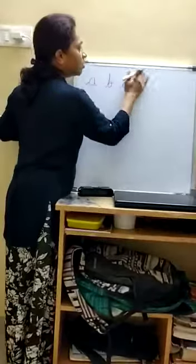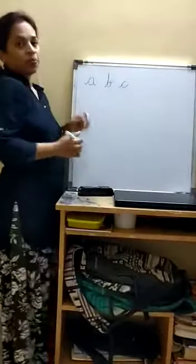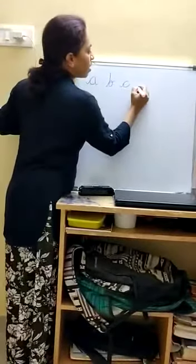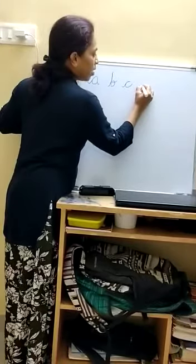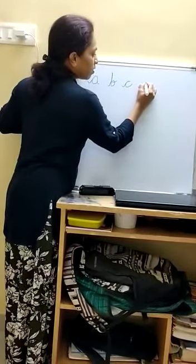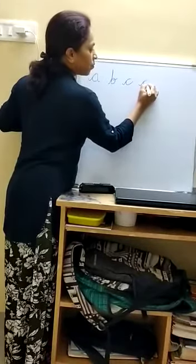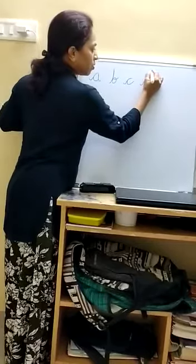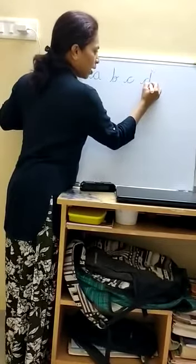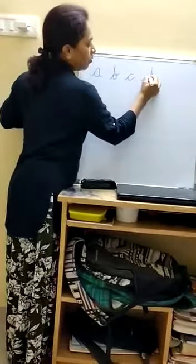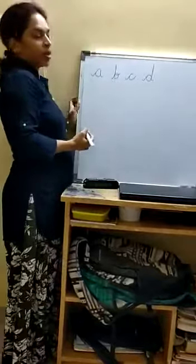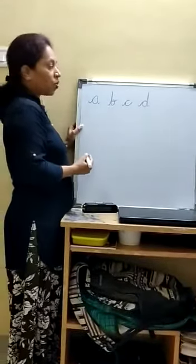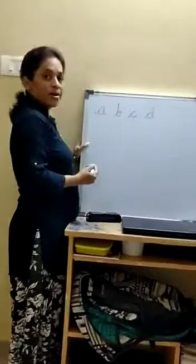Next letter is D. How to write? Starting from, take a tail, take a small curve, go up to the first line, come back, leave a tail. D. Name of the letter is D. Sound of letter is D.